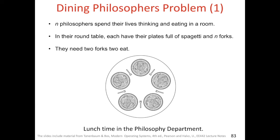We are going to consider some classical inter-process communication problems. In the dining philosophers problem, we have N philosophers who spend their lives thinking and eating in a room. At their round table, each has a plate full of spaghetti and N forks. They need two forks to eat. This is the placement of the plates of two philosophers and their forks on the table.